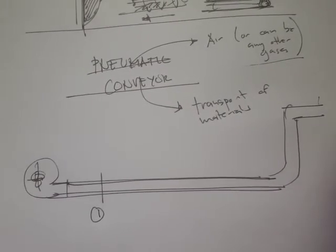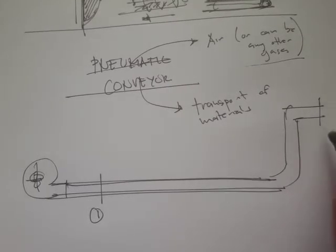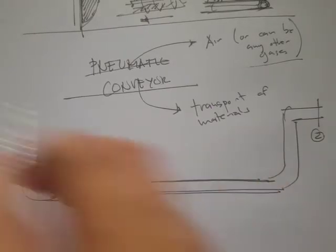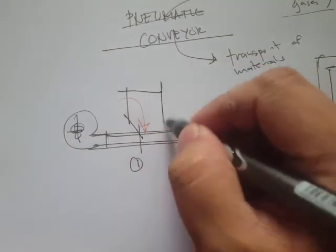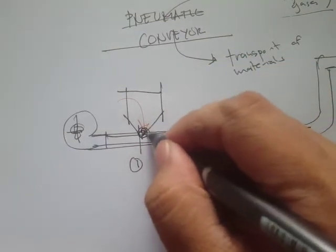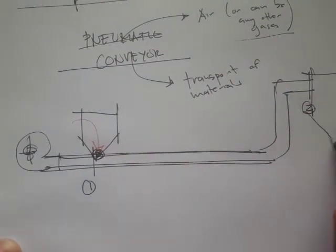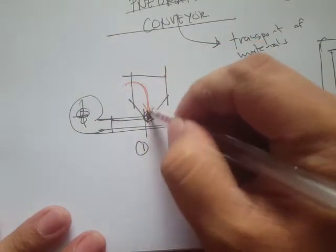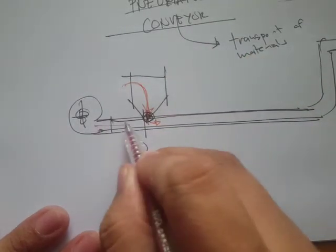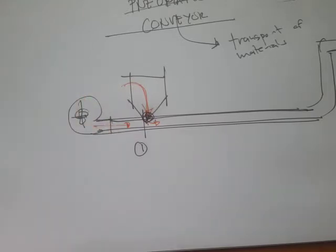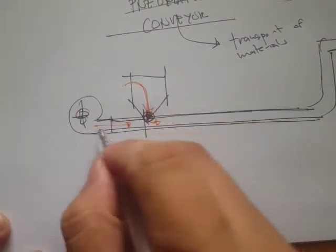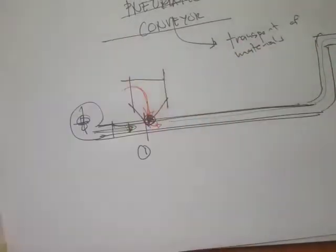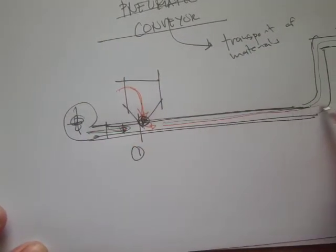At the inlet there is a feeder where material is loaded, and of course there must be some outlet. The material is loaded at the inlet and then it mixes with the air. So we have the air — shown here — and then the product, and at this point we have a mixture of air and the solid particles.